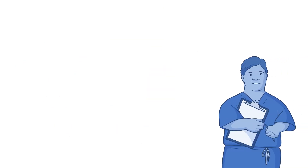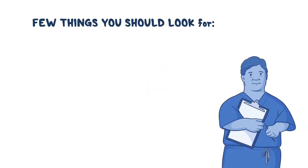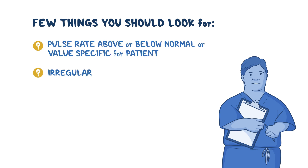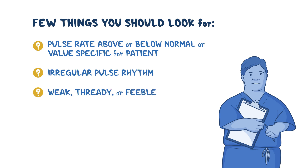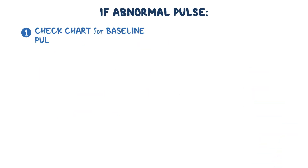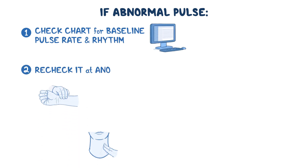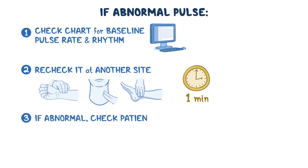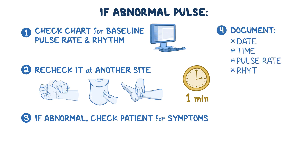When measuring the pulse, look for a pulse rate above or below normal, an irregular pulse rhythm, a weak thready or feeble pulse, or an unusually strong bounding pulse. If you find an abnormal pulse, check the patient's chart for their baseline rate and rhythm, then recheck at another site. When rechecking, count for a full 60 seconds and check the patient for symptoms. Remember to document the date, time, pulse rate, rhythm, amplitude, and any observations made.